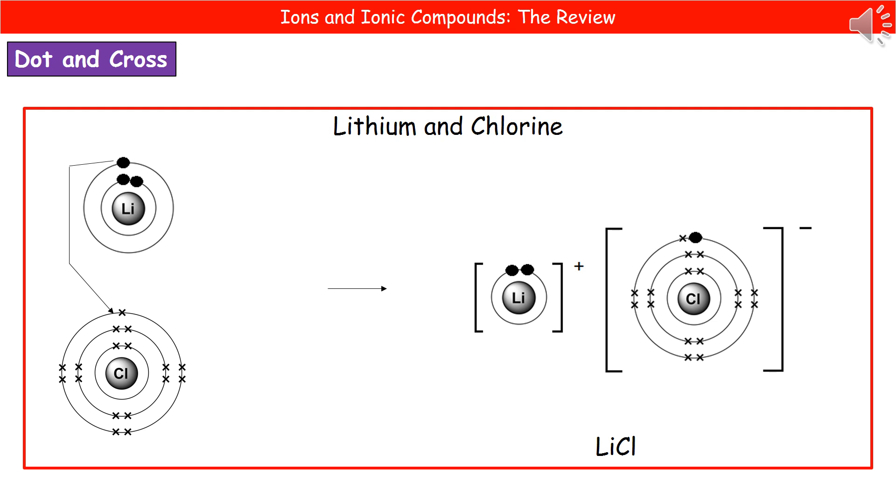So what we actually find there is one is as dots. The other is as crosses. And that is vital to remember that one of your actual atoms must be drawn with the electrons as dots. The other one must be drawn with the electrons as crosses. Otherwise, the next bit gets very confusing and you're going to lose marks just because of using the wrong notation.